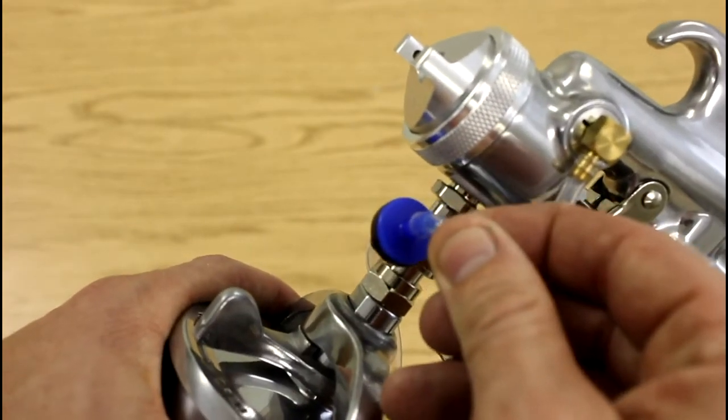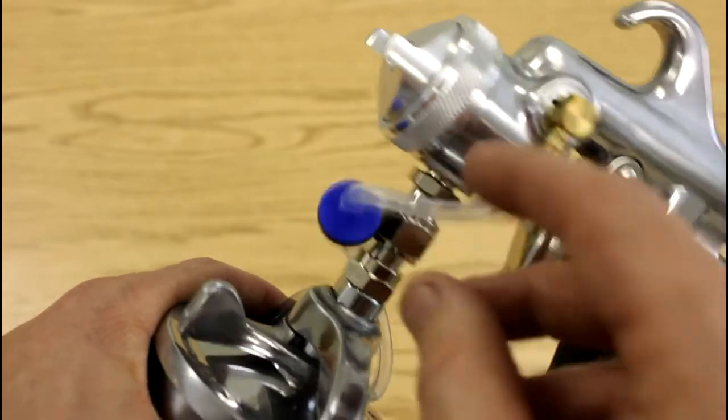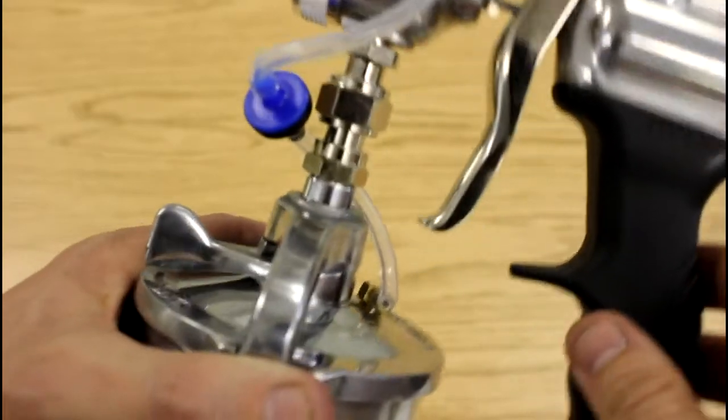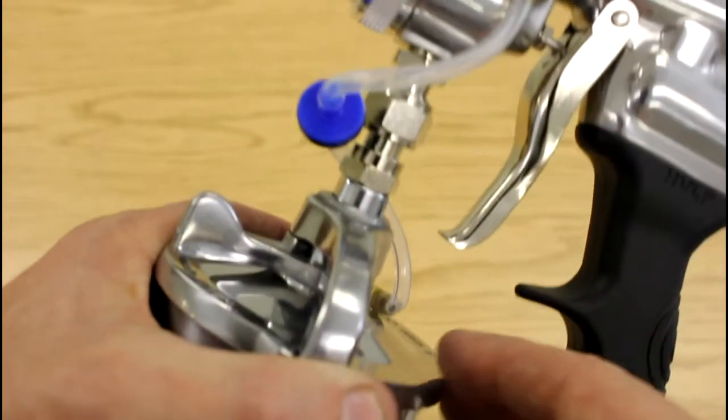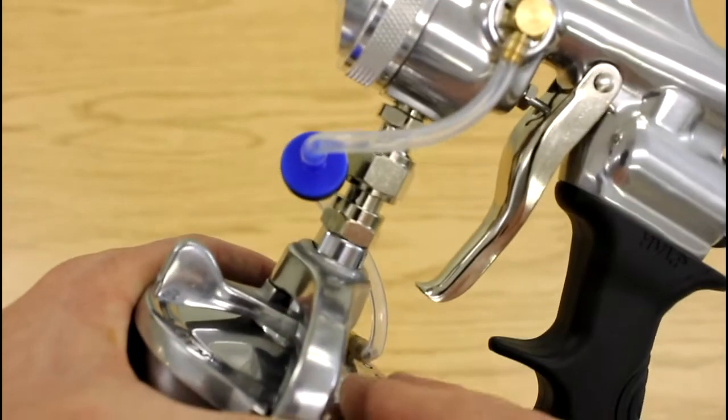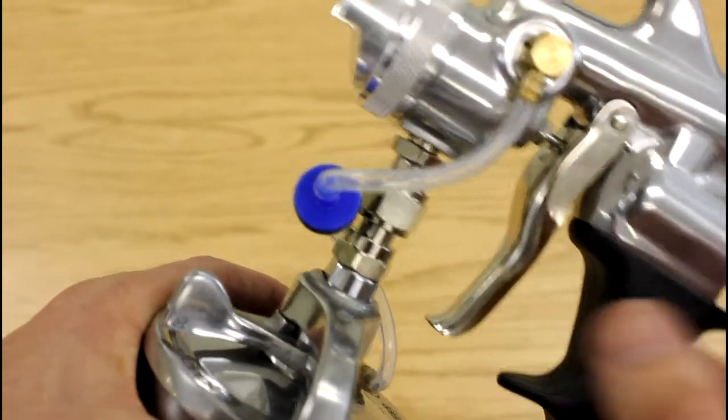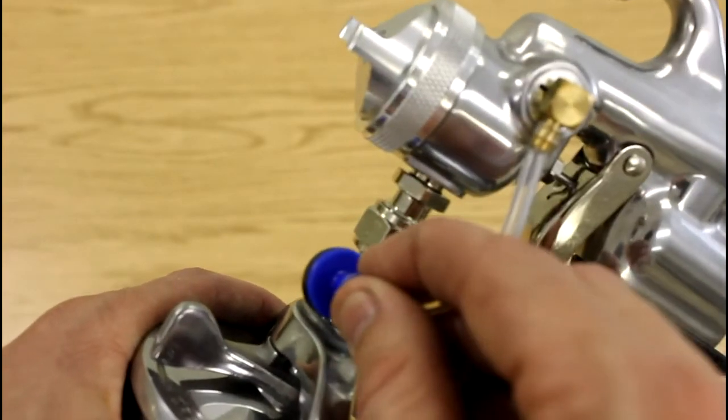You do want to make sure you have some of these extra check tubes on hand because just through normal use you'll turn the gun and paint will get up the tube and it will clog this little valve here. Once pressure is no longer in the cup, well you're done spraying for the day unless you've got some of these on hand.